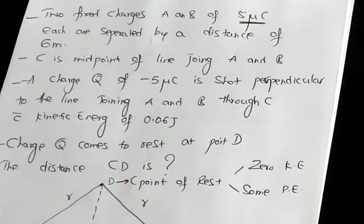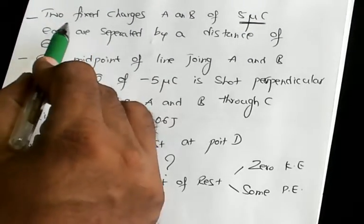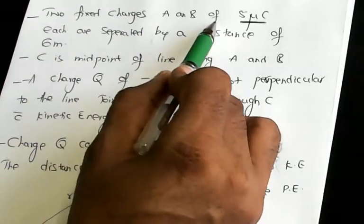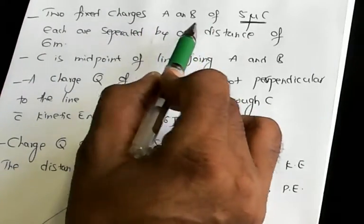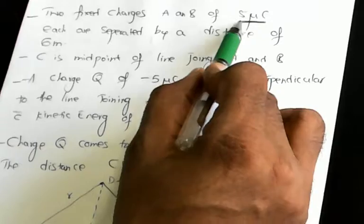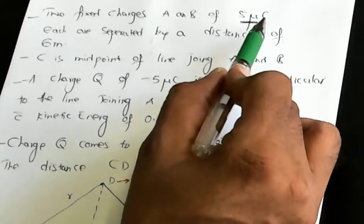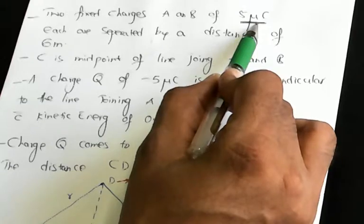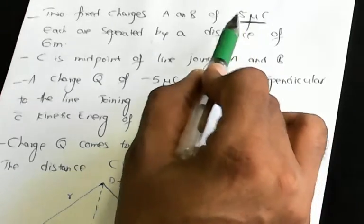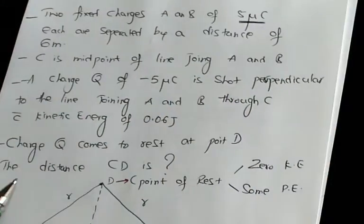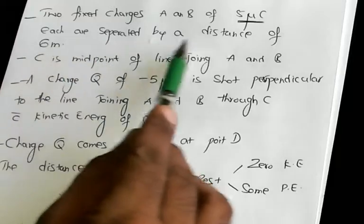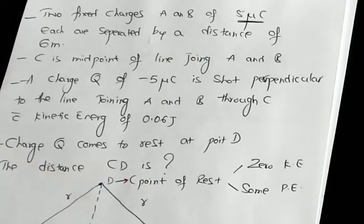Take down the problem. Two fixed charges A and B, each 5 micro coulombs — micro means 10 to the power of minus 6 — so 5 micro coulombs each, are separated by a distance of 6 meters.